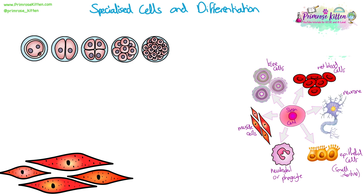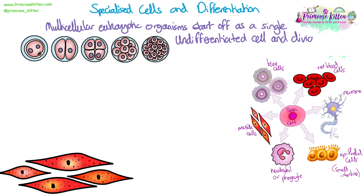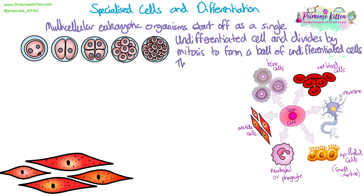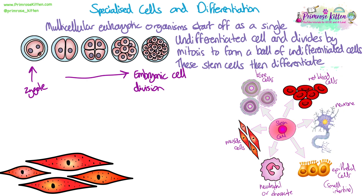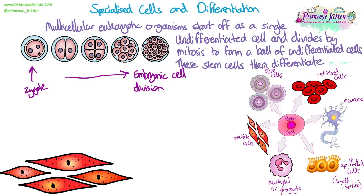Specialised cells and differentiation. All multicellular eukaryotic organisms start off as a single undifferentiated cell — the fertilised egg cell — and then this starts to divide by mitosis to form a ball of stem cells. These cells are undifferentiated. So these stem cells then start to differentiate into all the different types of cells you need in the body to make up all your different tissues and organs.